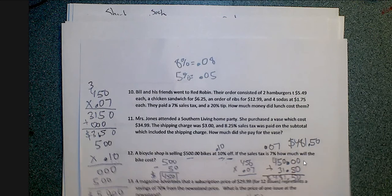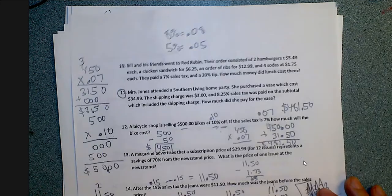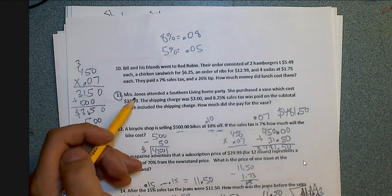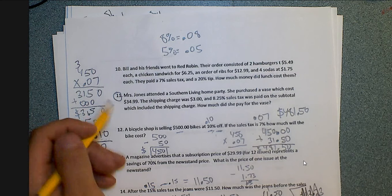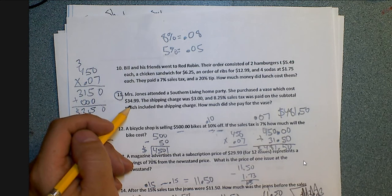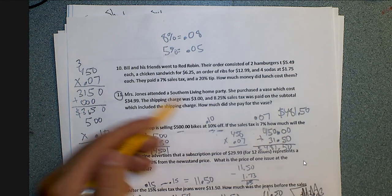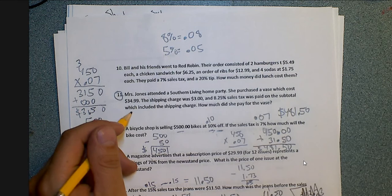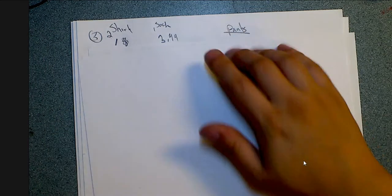Show any of your work for problem 11 on an extra piece of paper. Problem 11 reads: Mrs. Jones attends a Southern Living Home Party. She purchased a vase which cost $34.99. The shipping charge was $3.00, and there's an 8.25% sales tax on the subtotal which includes the shipping charge. How much did she pay for the vase? In number 11, we need to add the subtotal — that's what we have to add before we even do step 1.